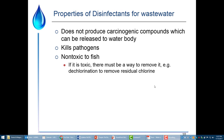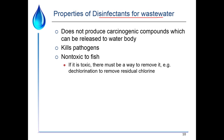In a wastewater treatment context, disinfectants still need to kill pathogens and we still don't want to produce carcinogenic compounds for release into the water body. But here, the disinfectant needs to be non-toxic to fish, or if it is toxic we have to be able to remove it. Chlorine can be dechlorinated by adding different chemicals. In many cases, wastewater treatment has moved toward ultraviolet disinfection because UV is just light — when you turn the light off, there is no residual, which is an advantage.